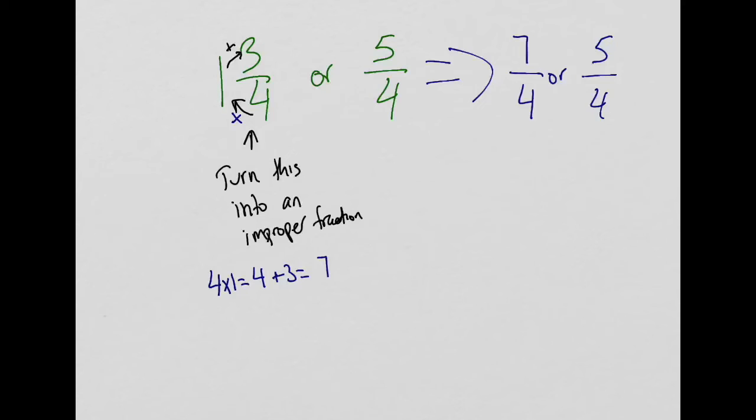When the denominators are exactly the same, it's basically asking you, what's bigger, seven or five? And we know that seven is bigger, so therefore one and three quarters is larger than five quarters. In a previous video I've also showed you a way to use division to help you.